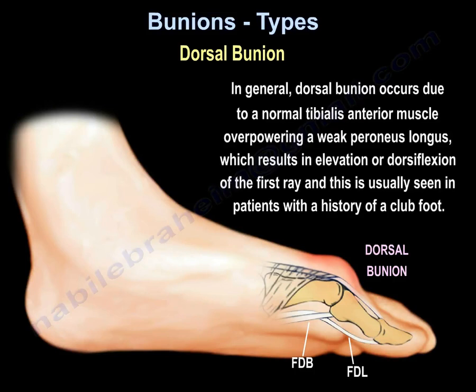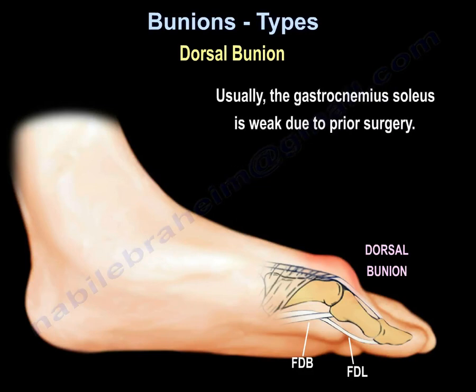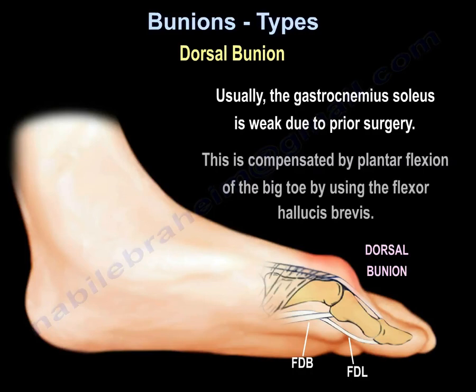In general, dorsal bunion occurs due to a normal tibialis anterior muscle overpowering a weak peroneus longus, which results in elevation or dorsiflexion of the first ray. This is usually seen in patients with a history of clubfoot. Usually the gastrocnemius-soleus is weak due to prior surgery. This is compensated by plantar flexion of the big toe using the flexor hallucis longus and brevis.